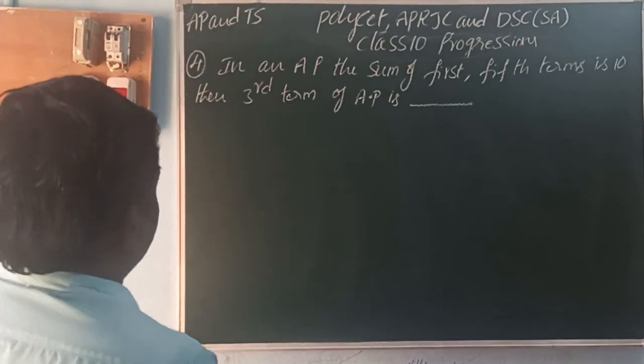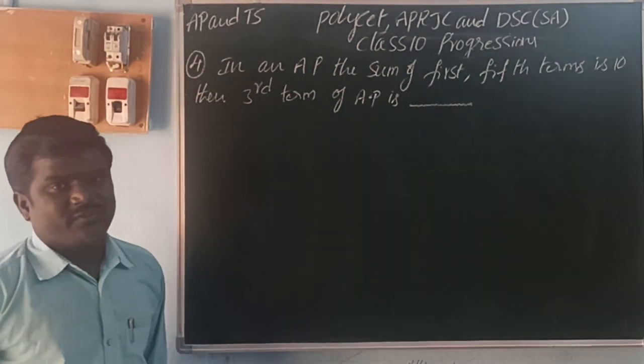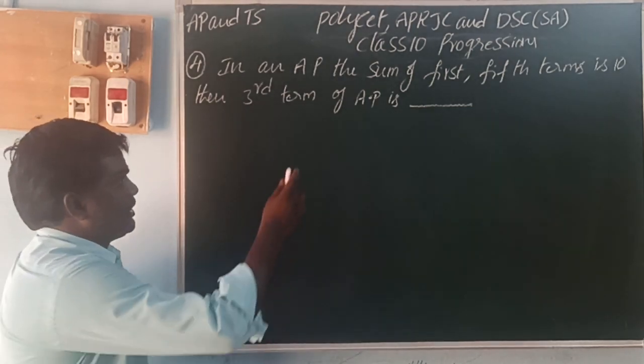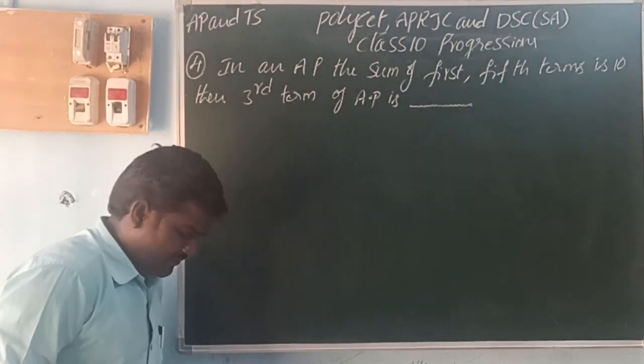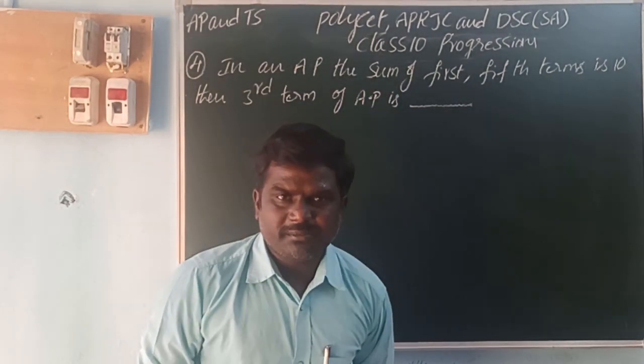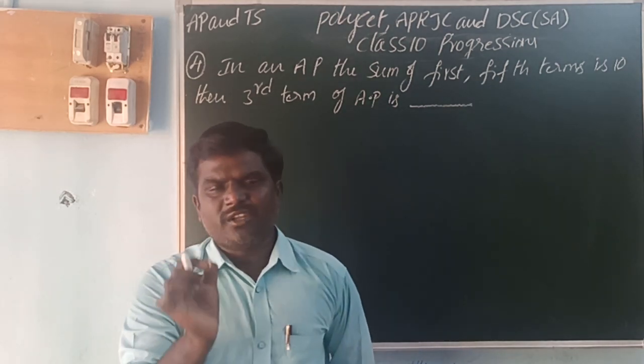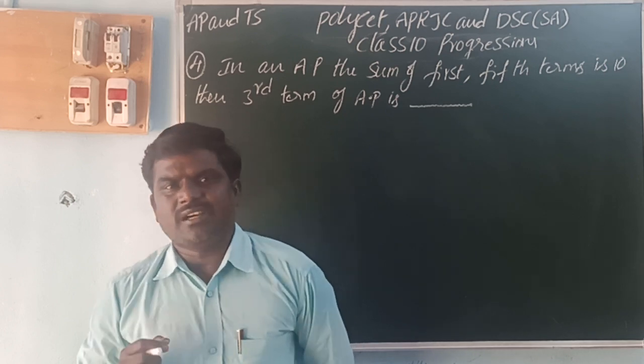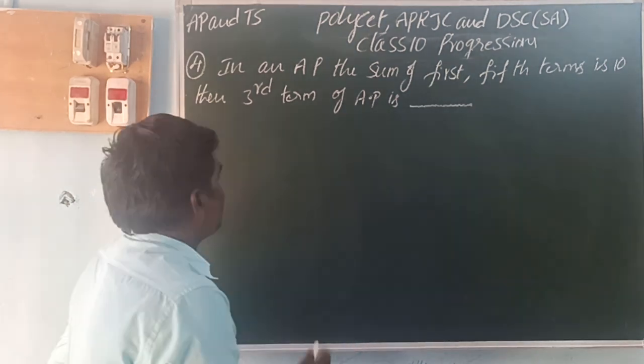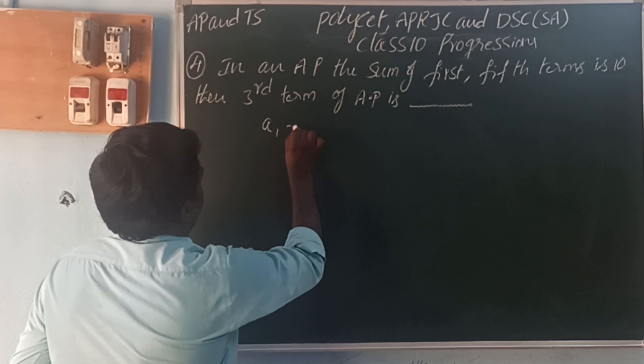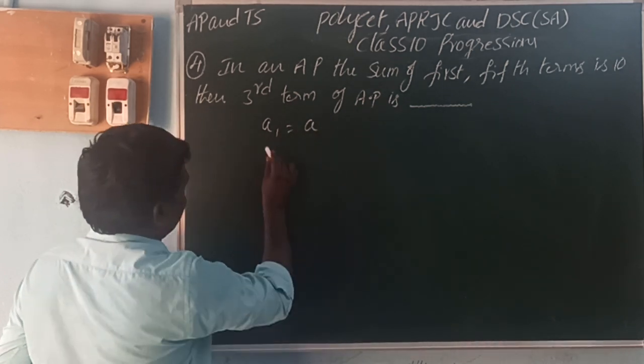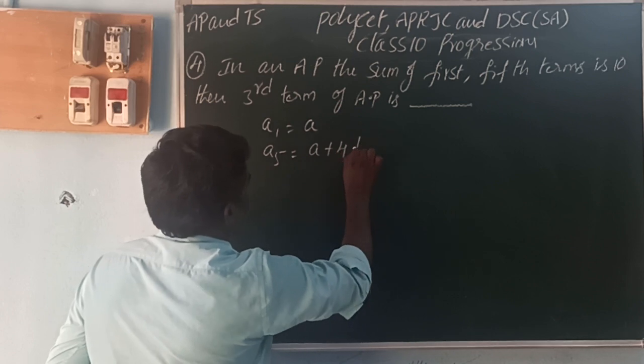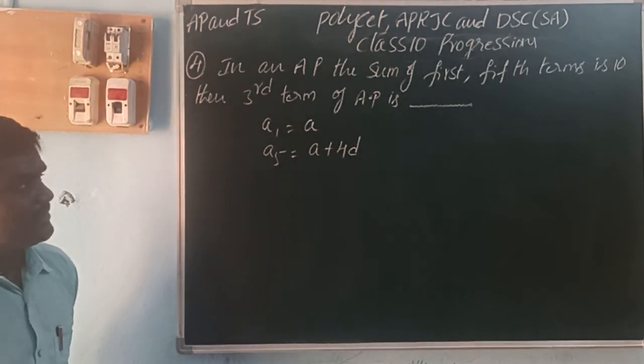Next, in an AP, the sum of first term and fifth term is 10. Find the third term. AP, the arithmetic progression. In this progression, the terms have common difference. Consecutive terms have common difference, that's called arithmetic progression. First term A1 = A. Fifth term A5 = A + 4D.